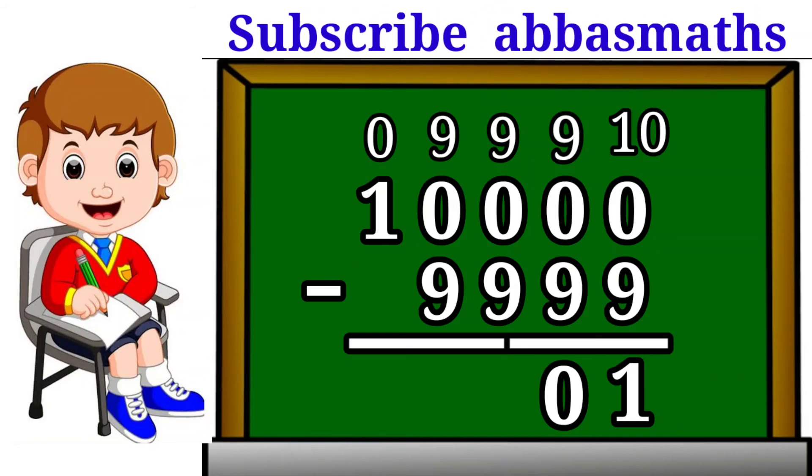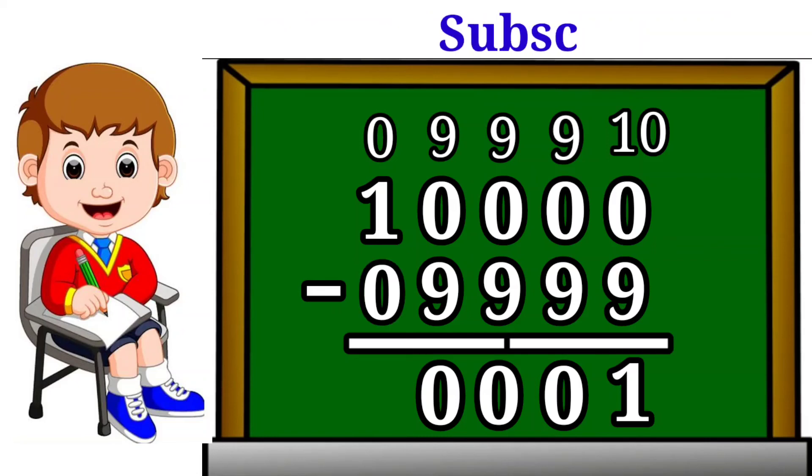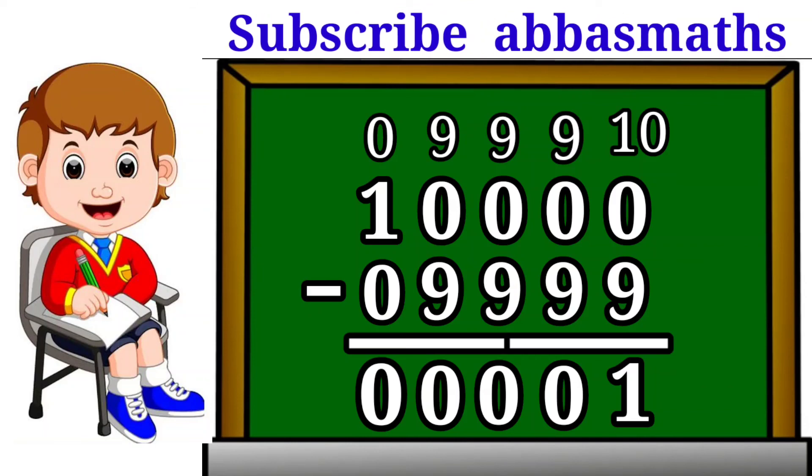Again subtract 9 from 9 equal to 0. And again 9 subtracted from 9 is equal to 0. And 0 subtracted from 0 gives equal to 0. So the answer is 00001.